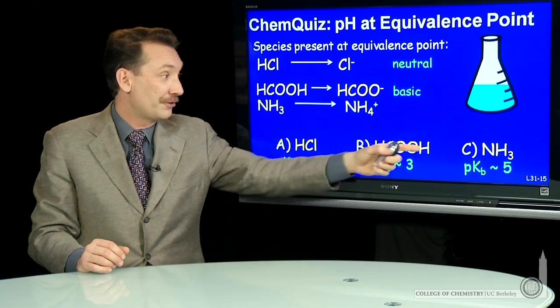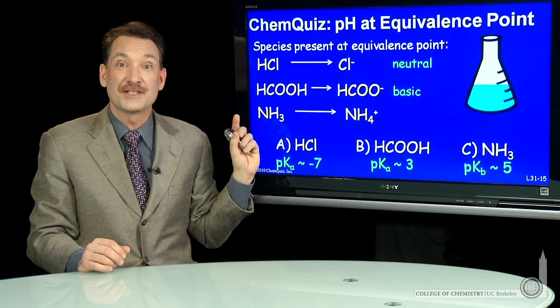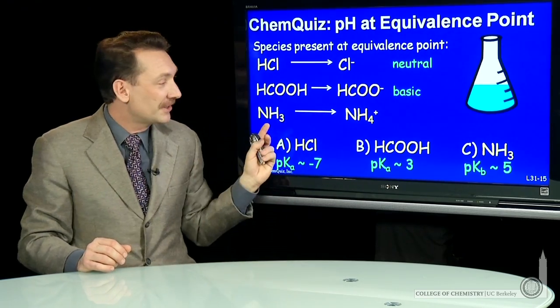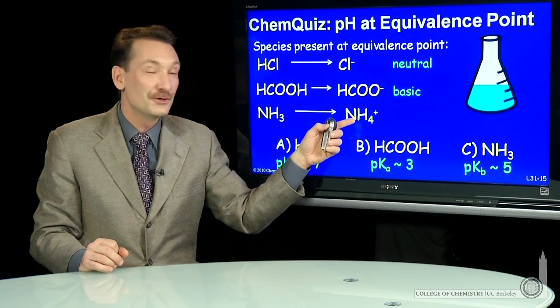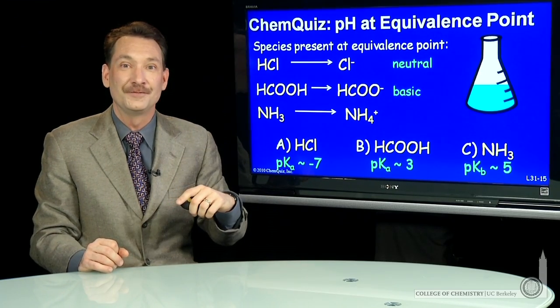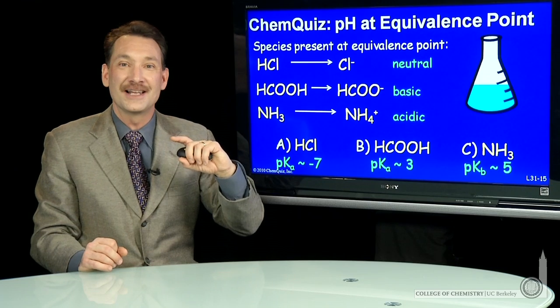For our third choice here, ammonia, that's a weak base. I would titrate that with a strong acid and convert it into its conjugate acid. So at equilibrium, I'd have a solution of a weak acid. So this solution is slightly acidic.